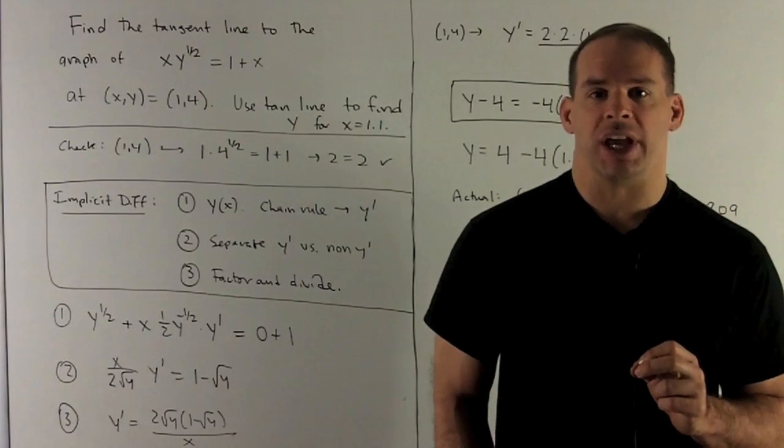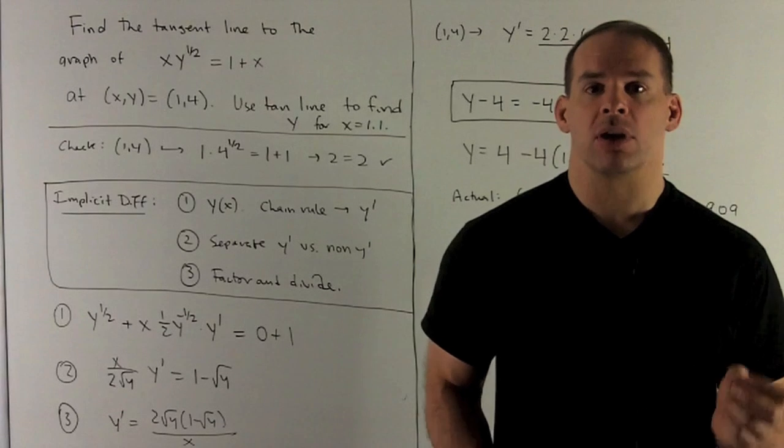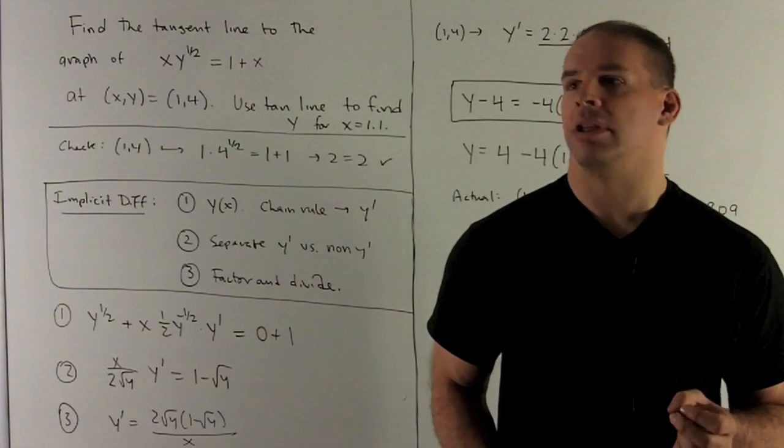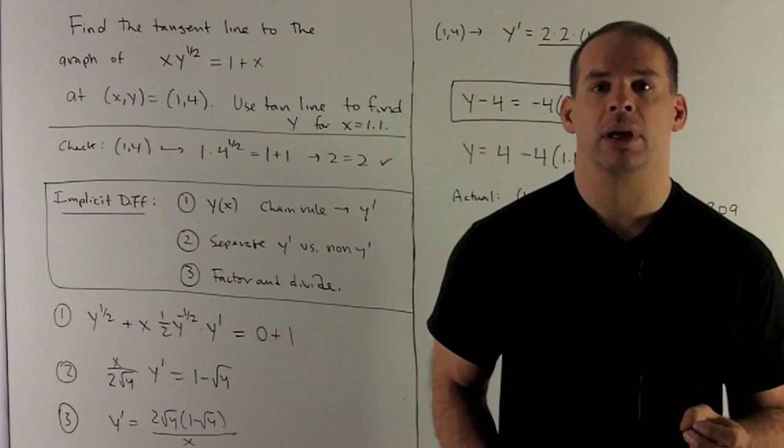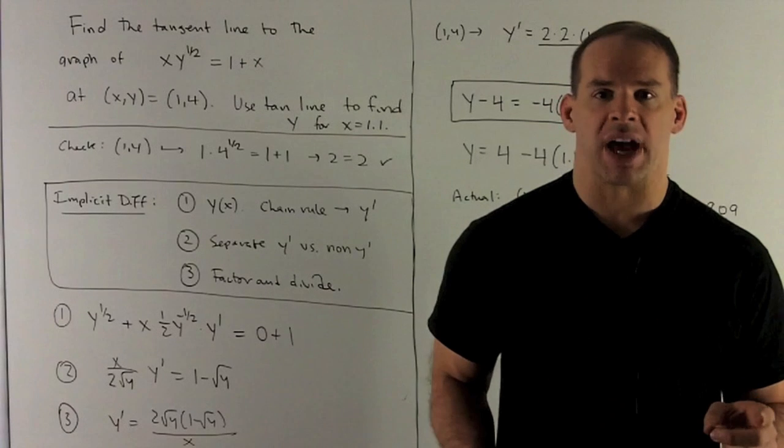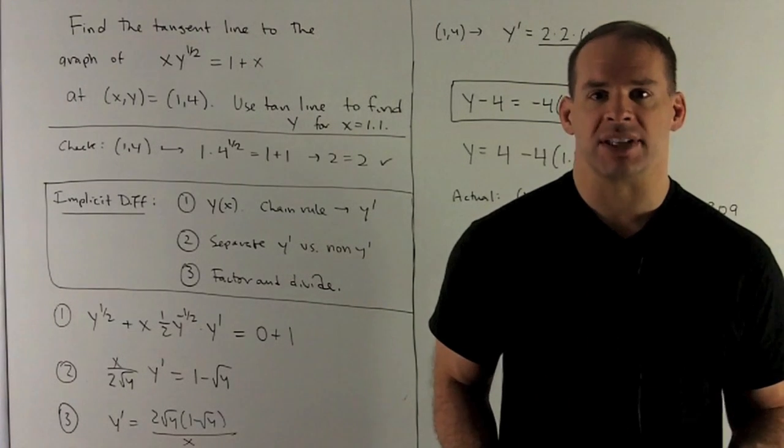So, how does implicit differentiation work? Well, we're given an equation. If I take the derivative of both sides of the equation, what comes out stays equal.